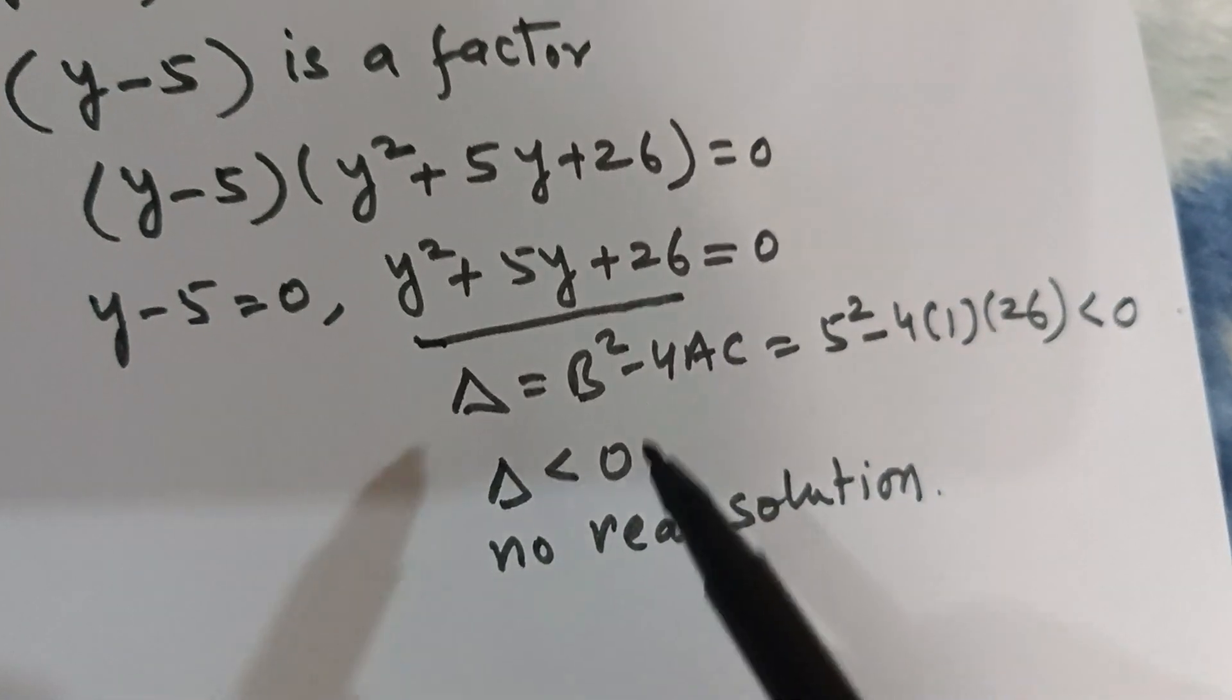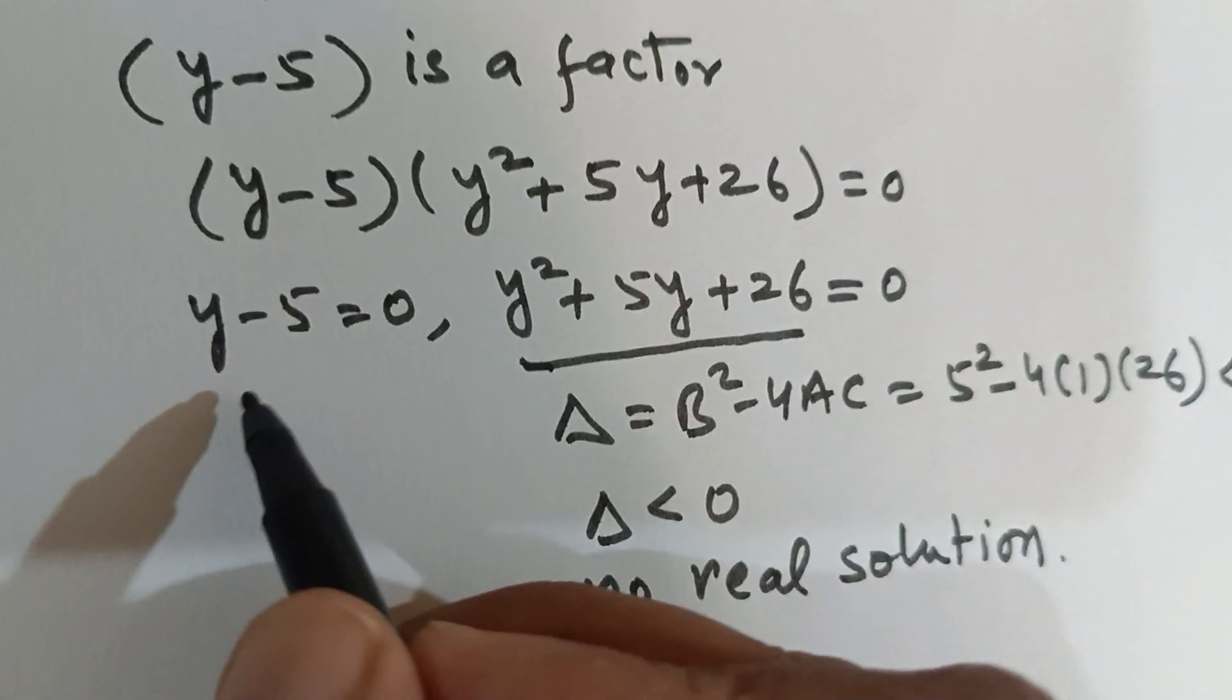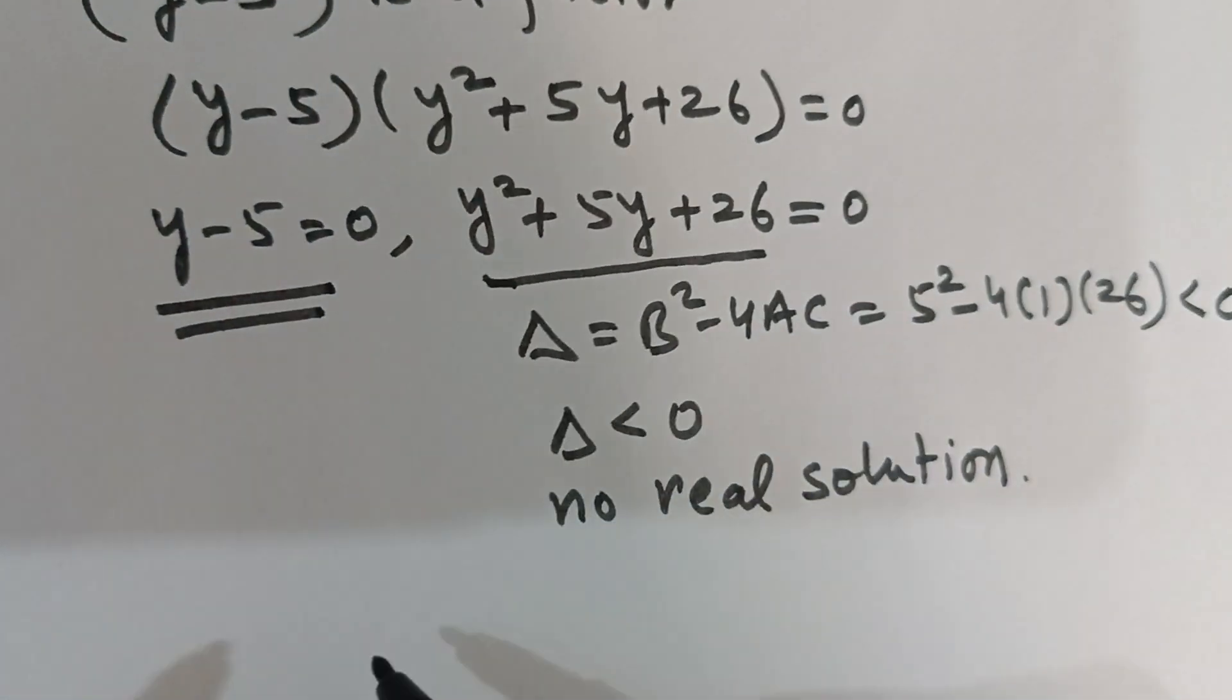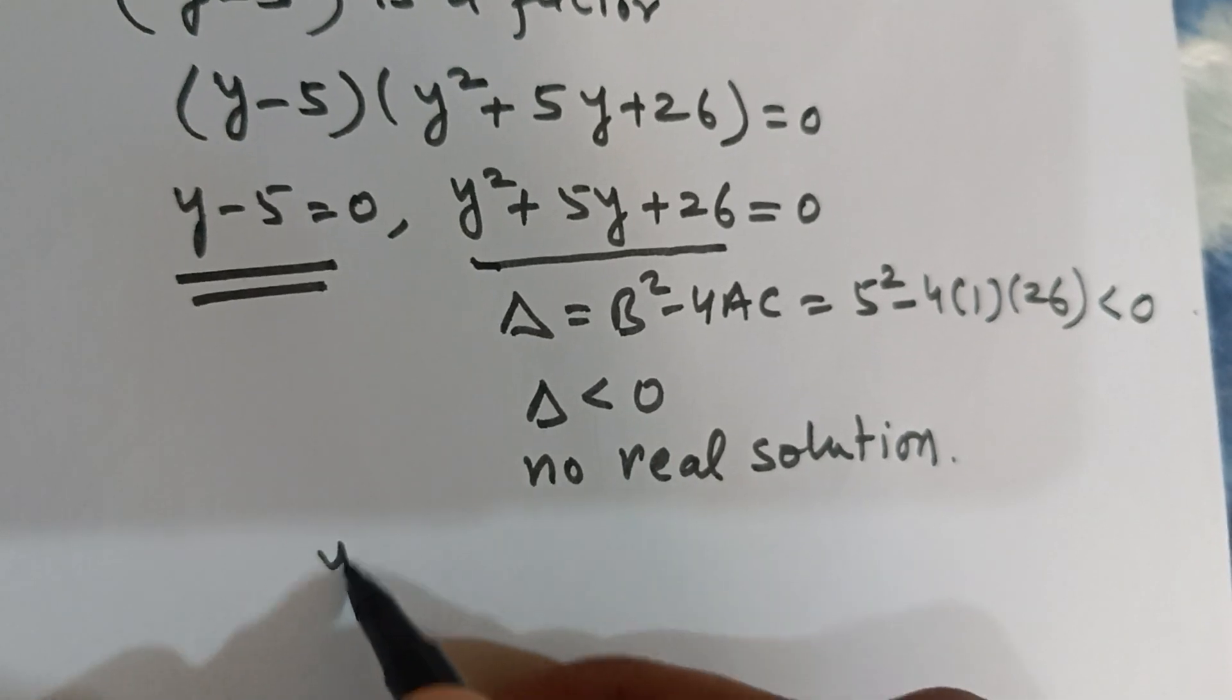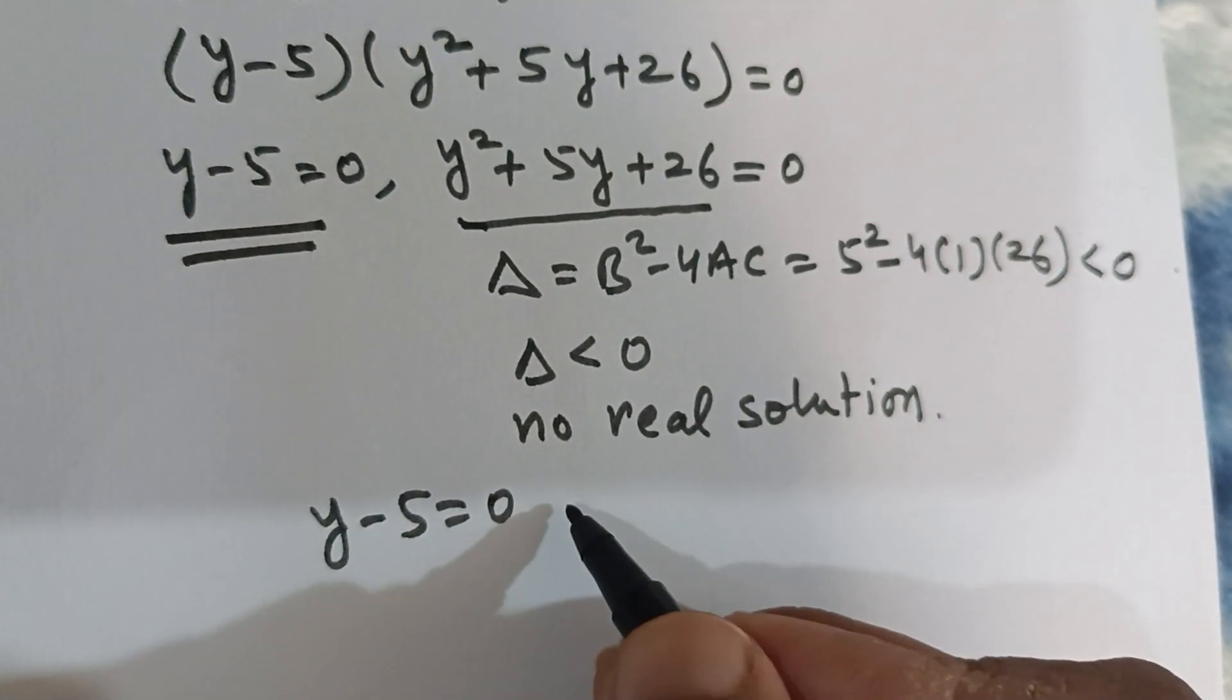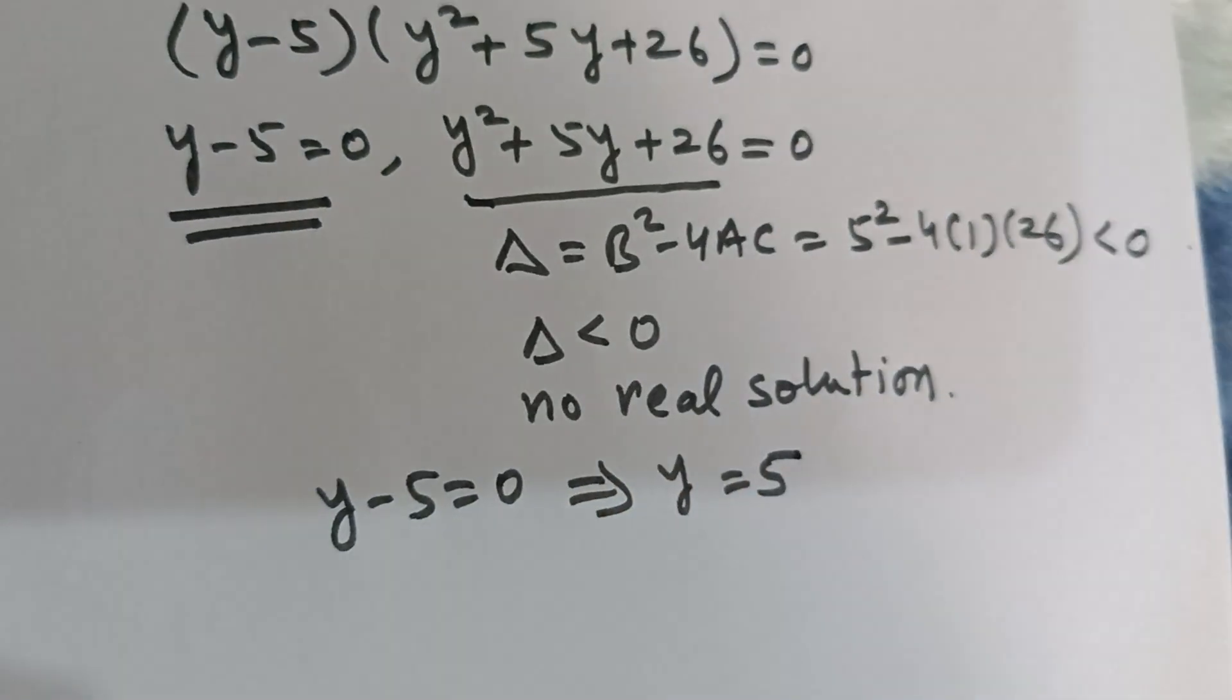So we are left with this factor (y - 5) only, and the equation y - 5 = 0 gives y = 5.